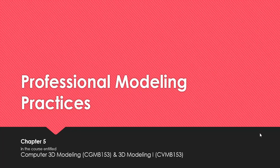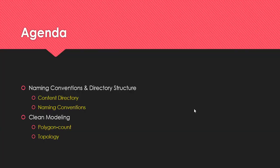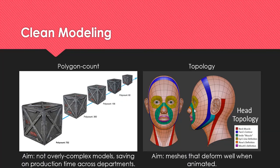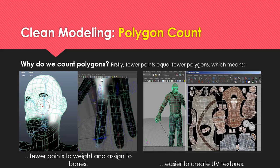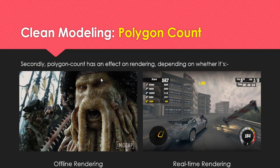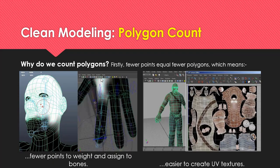Good news — we don't cover a lot of Chapter 5. The only time we see Chapter 5 is in Section A, the multiple choice questions. I'm going to ask about polygon count. Just understand why we count polygons — focus on this particular slide. That's about it for Chapter 5.